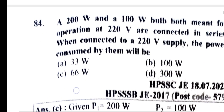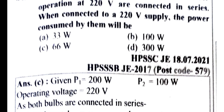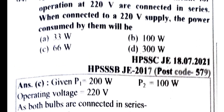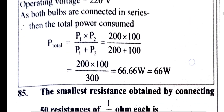A 200W and a 100W bulb, both rated for operation at 220V, are connected in series. When connected to a 220V supply, the power consumed by them will be: P1 = 200W, P2 = 100W, operating voltage = 220V. Both bulbs are connected in series. Total power consumed equals P1 times P2 divided by P1 plus P2, which solves to 66W.